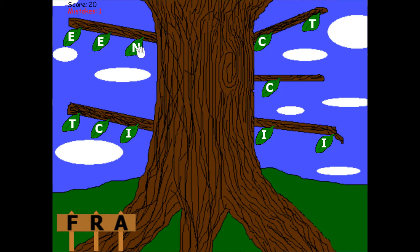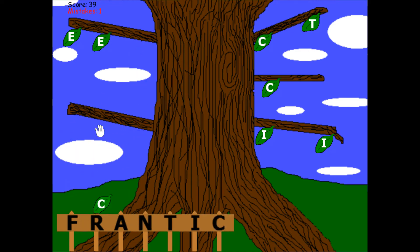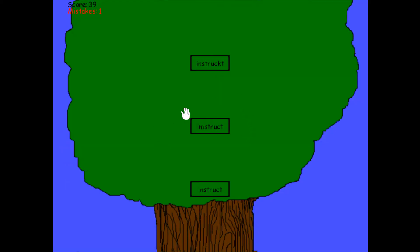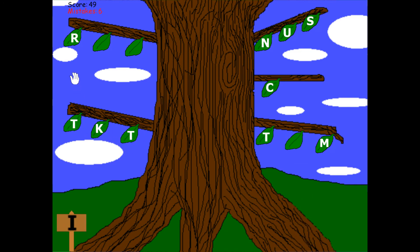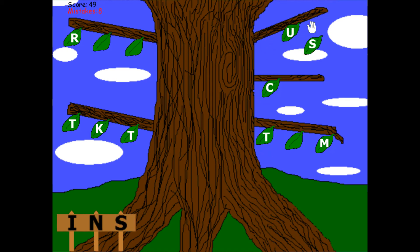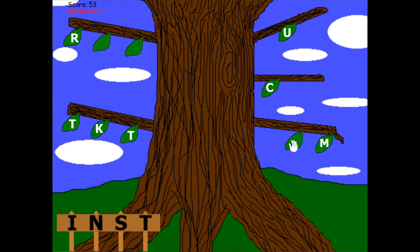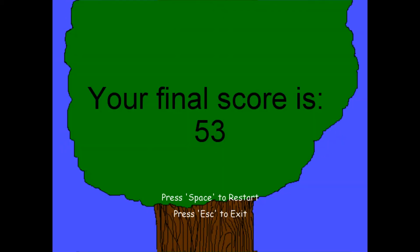it gives them a mistake — 10 mistakes means the game is over. So they keep playing, they get it correct, and it goes to the next word where they have to pick the next word. Let's just say they make their 10 errors — they made 10 mistakes, and it brings them to the end screen.